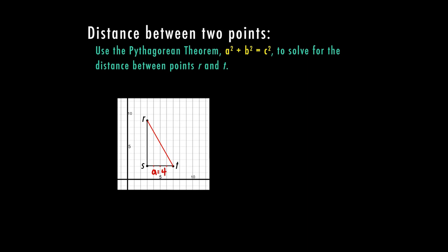And then between s and r, this will be our b, we have 1, 2, 3, 4, 5, 6, 7. So the distance there is 7. So now we can use that information to solve for our c.